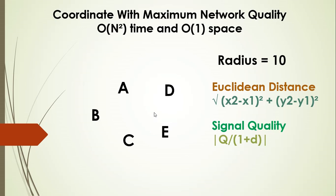Let's look at the example clearly. Say we have five towers A, B, C, D, E and the radius is given as 10. To refresh your knowledge on Euclidean distance: for two points (x1, y1) and (x2, y2), the distance is the square root of (x2 − x1)² + (y2 − y1)². The signal quality as given in the problem description is the quality factor of the tower divided by 1 plus the distance from your chosen point.